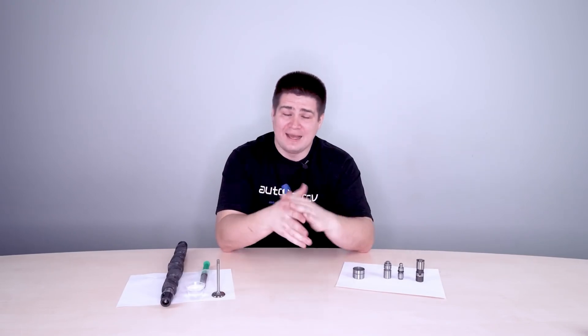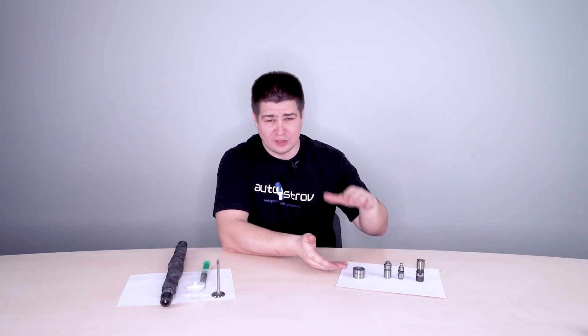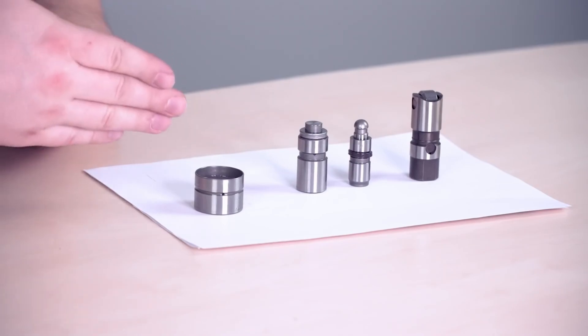The reasons for the failure of hydraulic tappet are simple. It's the wear of the plunger pair itself, or the jamming of the spring or valve.